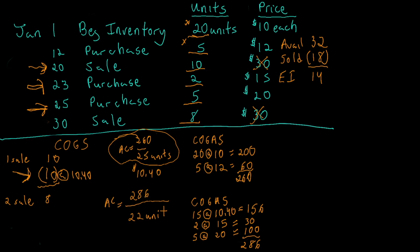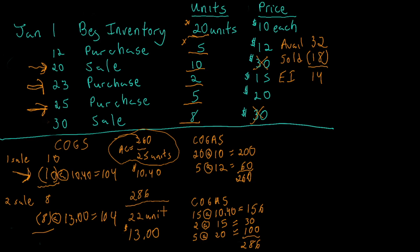Our new average cost is $286 divided by 22, which gives us $13 on the dot. So those 8 units sold on the 30th had an average cost of $13. Now we've accounted for all 18 units sold. Adding up the cost of goods sold — 10 units at $10.40 plus 8 units at $13 — gives us a total cost of goods sold of $208 using the average cost method.